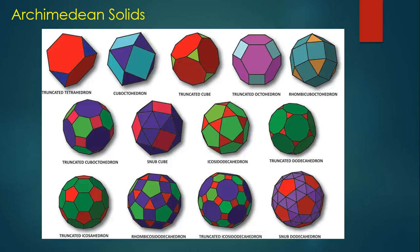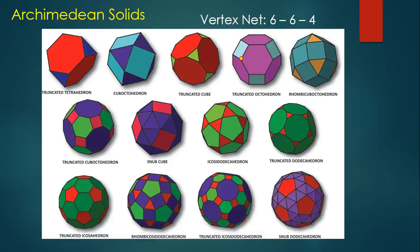For example, the truncated octahedron — it's the fourth one in the top row. If we look at one vertex and count the number of sides on the polygons surrounding it, we can see that we have a hexagon, a hexagon, and a square, so we could describe its vertex net as 6-6-4. There are only 13 Archimedean solids, and you're not responsible for memorizing their names — just be aware of them and know that we can make vertex nets and nets from them. You will be responsible for knowing the names of the platonic solids, however.